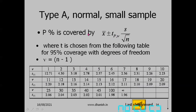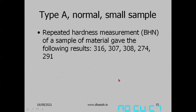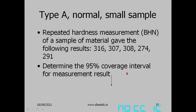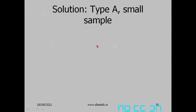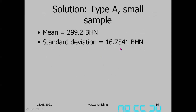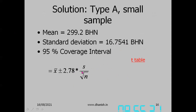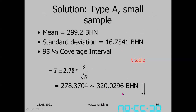Example: repeated hardness measurements with only five samples — too few to judge normality, so normality is assumed. Determine the 95% coverage interval: compute x̄ and standard deviation s, then apply x̄ ± t(95%, ν)·(s/√n). The resulting 95% coverage interval for mean hardness is 278.37 to 320.03.